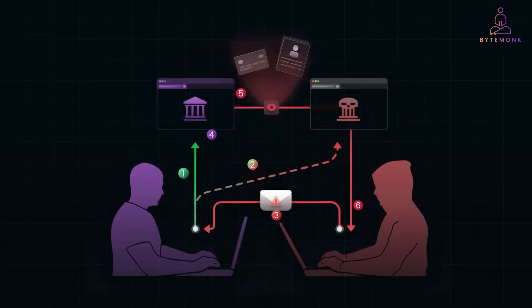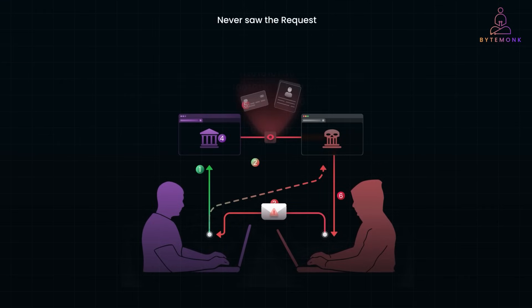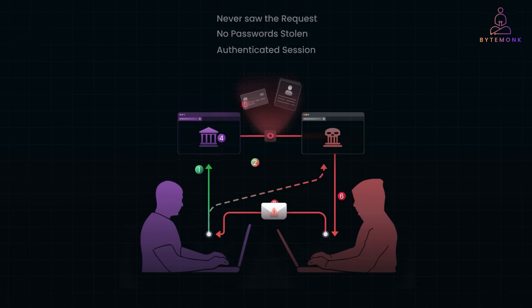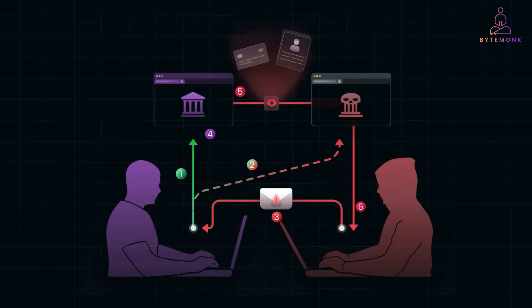The bank processes the request thinking you actually intended to transfer money — and then your money is gone. The worst part? You never saw the request happening. No passwords were stolen, and the attacker simply took advantage of your authenticated session. In fact, a CSRF vulnerability was found in ING Bank's online banking system that allowed attackers to transfer money without requiring user confirmation. An attacker could craft a malicious request and send it to a logged-in user, tricking them into unknowingly transferring money.